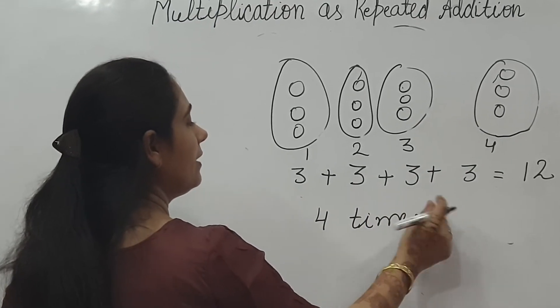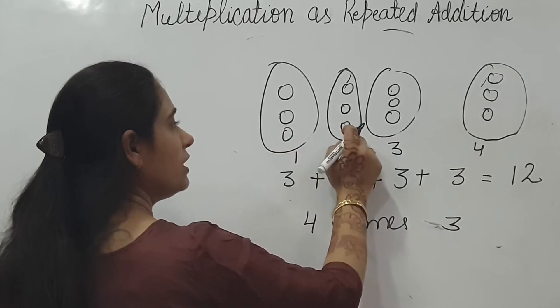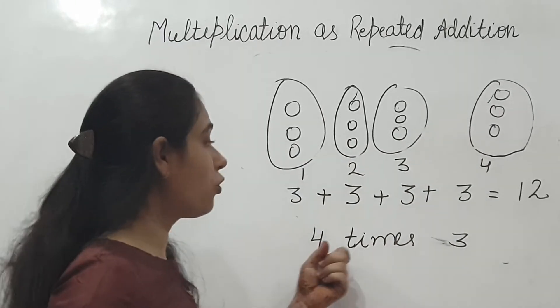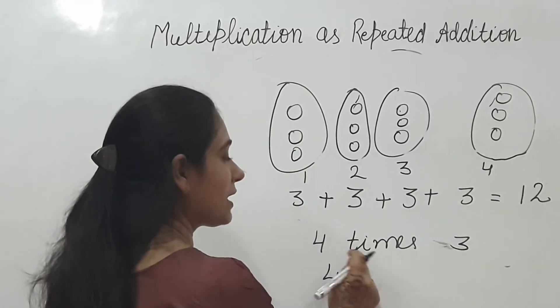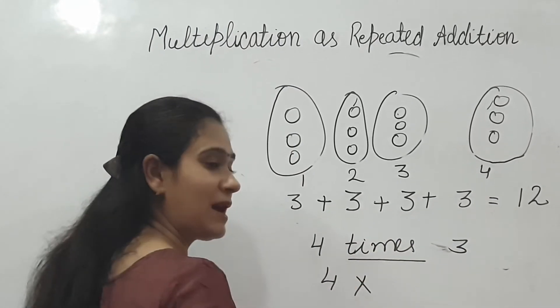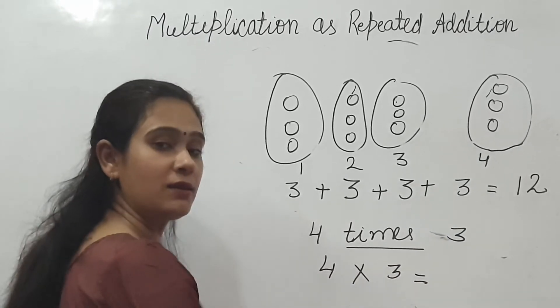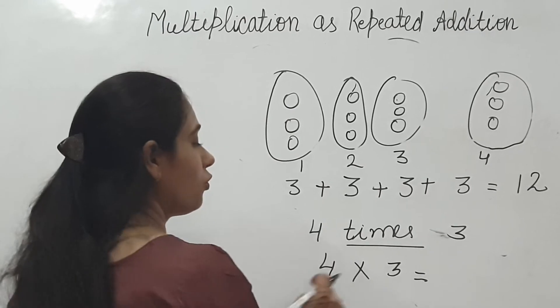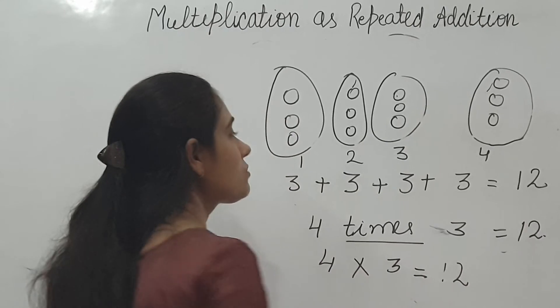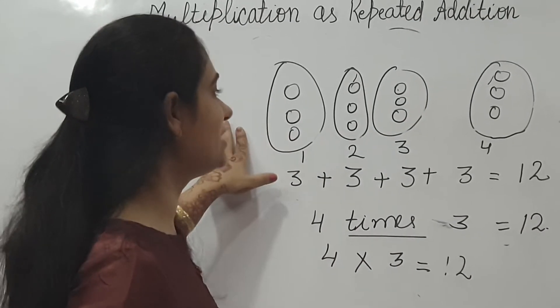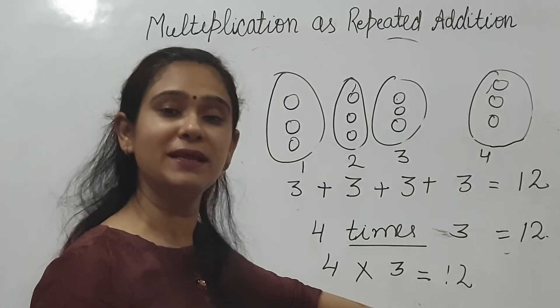Look how many groups are there. 1, 2, 3. All of them 3. 3, 3, 3, 3. The same thing. 4 times 3. Now count, 4 threes are 12, 4 times 3. This was your repeated addition. This is your multiplication.